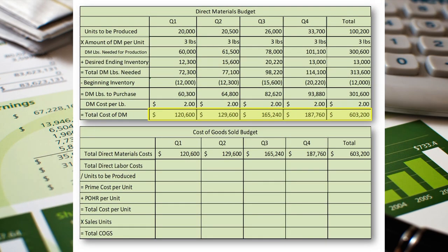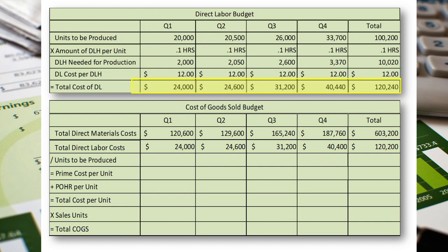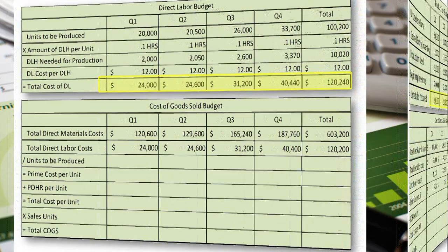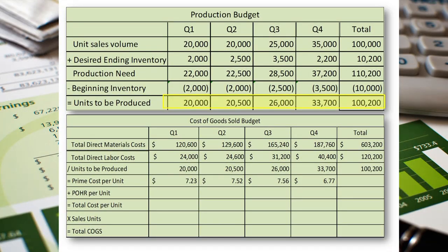Here we have the total direct materials cost from the direct materials budget, and the total direct labor cost from the direct labor budget. Units to be produced comes from the production budget. In this step, we are adding direct materials and direct labor — which are known as prime costs — and dividing them by production units to arrive at prime cost per unit.